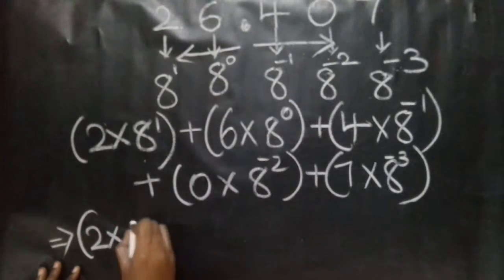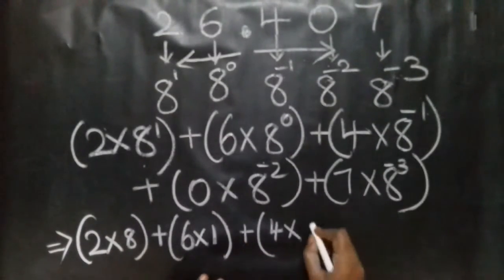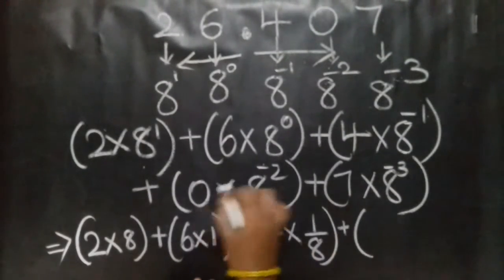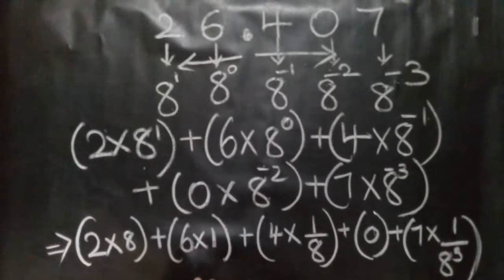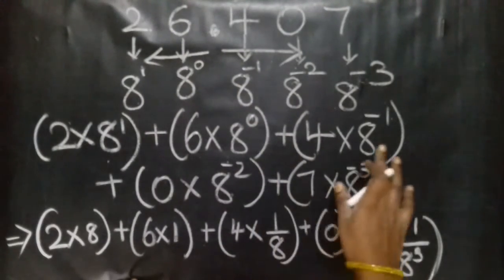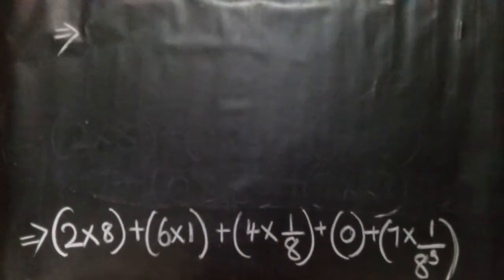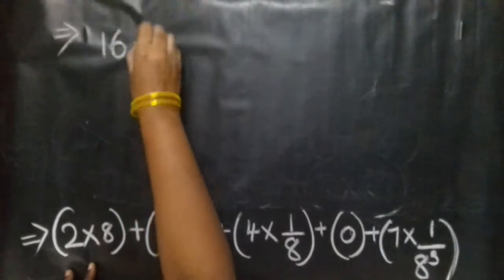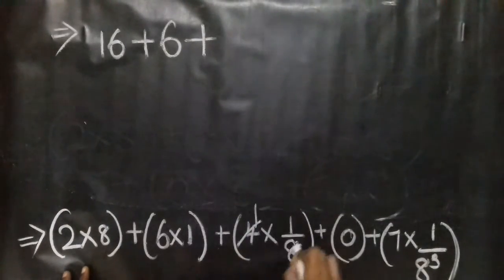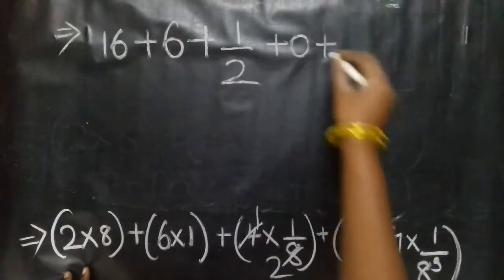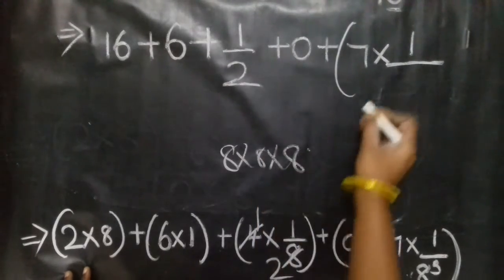Substituting values: 2 into 8 raised to the power 1 — value is 8 — gives 16; plus 6 into 8 raised to the power 0, which equals 1; plus 4 into 8 raised to the power minus 1, which is 1/8; plus 0 into 8 raised to the power minus 2; plus 7 into 1 by 8 cubed. 8 cubed is 8 × 8 × 8, which equals 512.